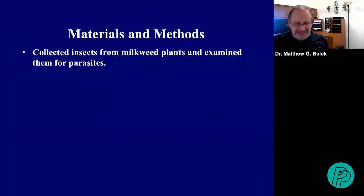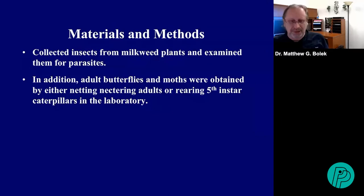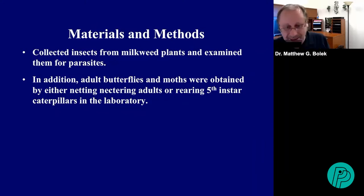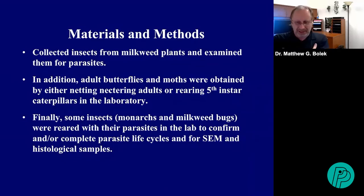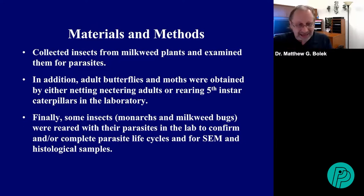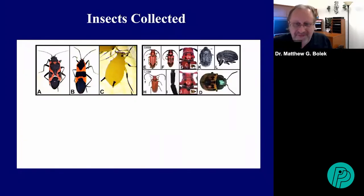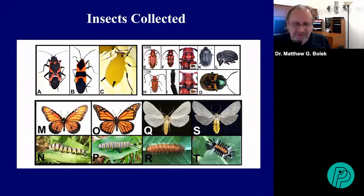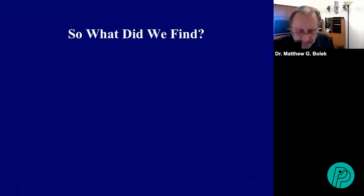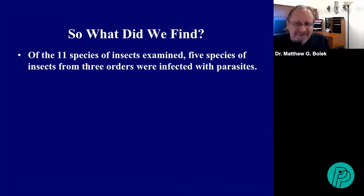We collected insects from milkweed plants and examined them for parasites. Adult butterflies and moths were obtained by either netting nectaring adults or rearing fifth instar caterpillars in the laboratory. Some insects — monarchs and milkweed bugs — were reared with their parasites in the lab to confirm complete parasite life cycles and for SEM and histological samples to identify them and understand how they get transmitted. We collected three different species of bugs, five different species of beetles, and four different species of butterflies and moths.